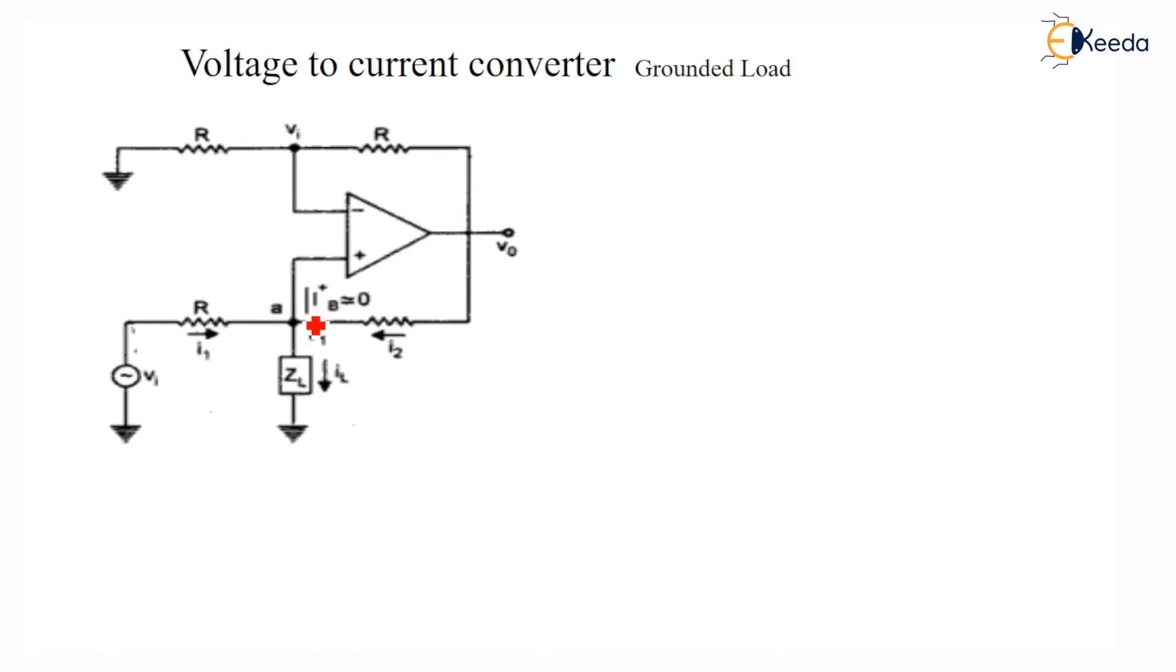Now, I'll apply KCL over here. We know KCL says that sum of incoming current is equal to sum of outgoing current. So here, sum of incoming currents are I1 plus I2 is equal to IL. The IL is current flowing through this load. So I1 plus I2 is equal to IL.